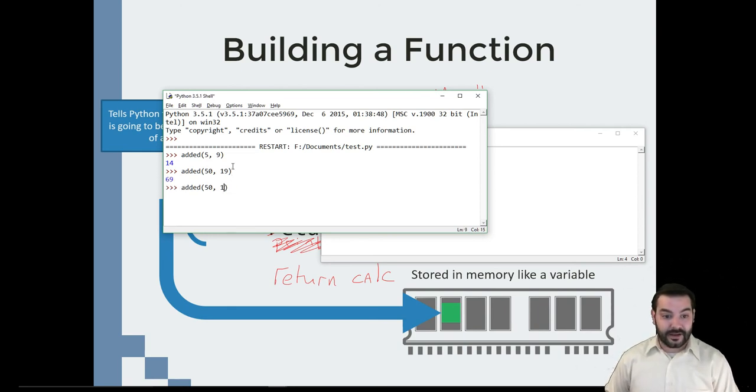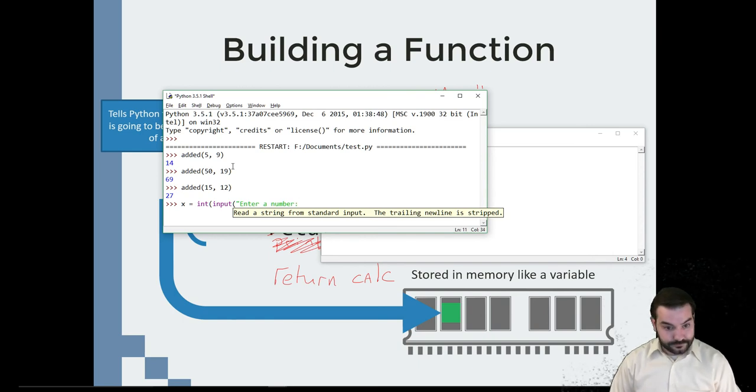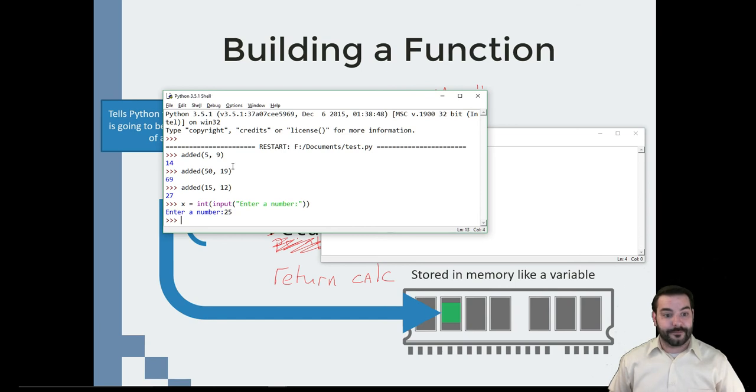I'm now able to control what's just through parameters. And I'm able to use things like getting input. If I would like x equals int input, enter a number, enter a number, 25. Then I can come in, x, 20.